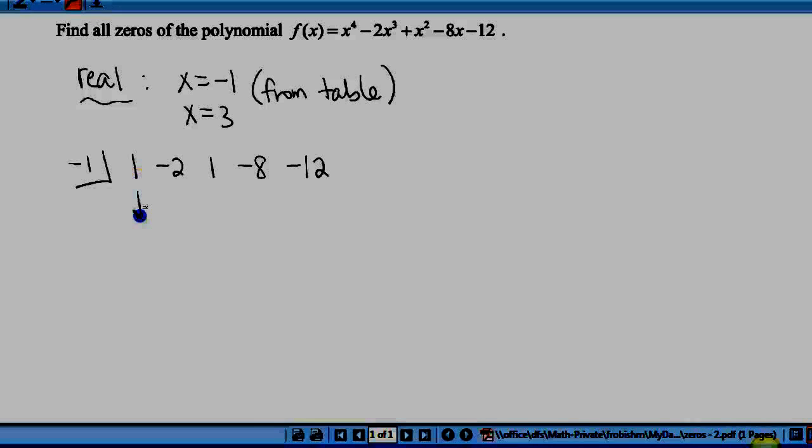And then I'm going to list out my coefficients. So that will be one, negative two, one, negative eight, and negative 12. And again, our gut check when we do the synthetic division is we better end up with a remainder down here of zero.